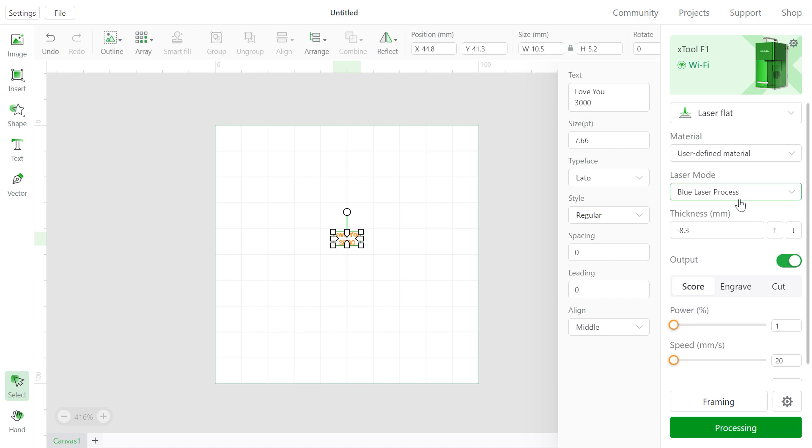I'm going to roughly put it here. So first, let's choose the right parameters for this engraving. Let's choose the Infra Laser Process, and let's choose Score. Round this at 100% power at 15 millimeters per second. And now let's run the framing to see if we have got it correctly.